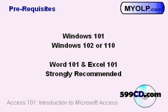Prerequisites. The prerequisites for this course are Windows 101, Introduction to Computers, and Windows 102 or Windows 110 — our Introduction to Windows 98 or Windows XP classes, respectively. It is also strongly recommended that you have taken Word 101 and Excel 101. In our Word class, we go over crucial concepts like cut, copy, and paste. Knowing spreadsheet fundamentals — rows, columns, and such — from Excel will really help you understand database technology. These courses aren't required, but they are recommended.